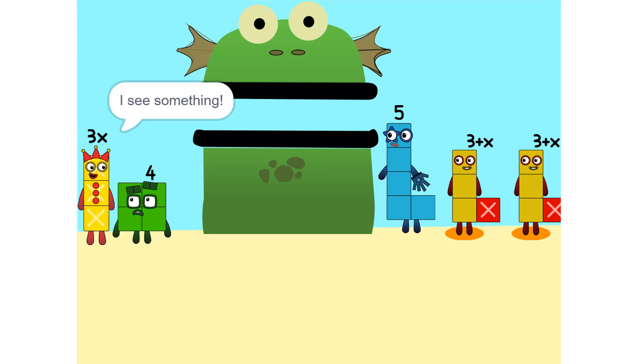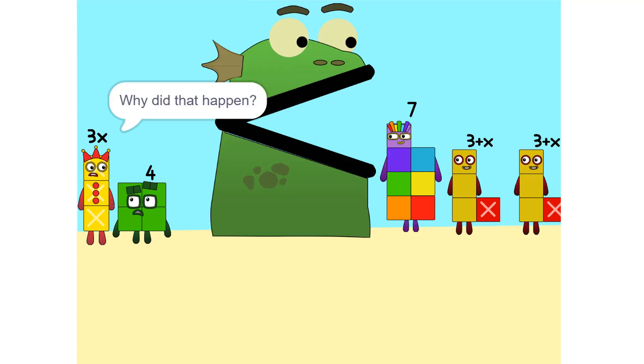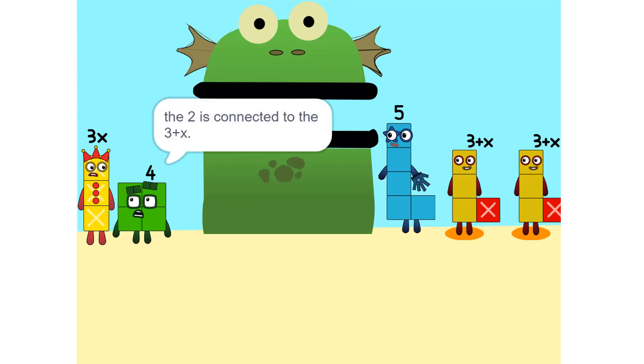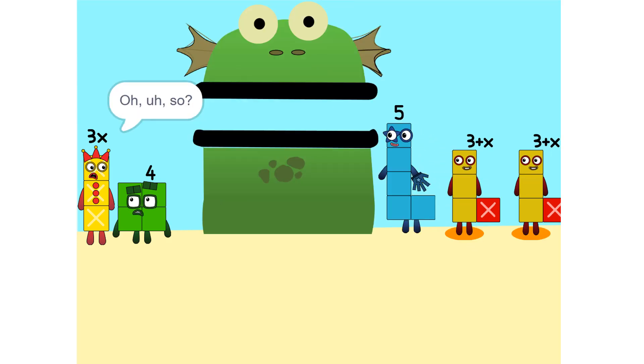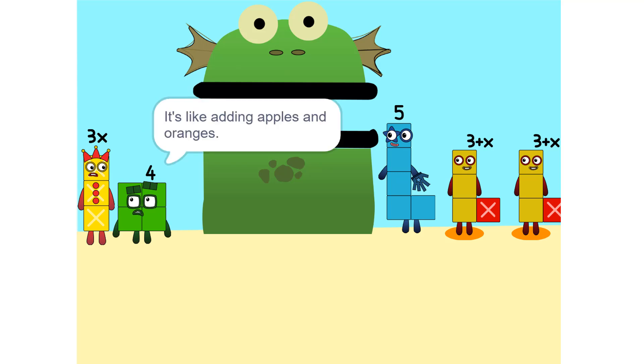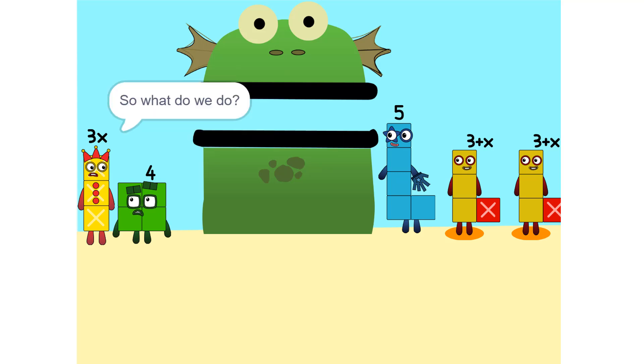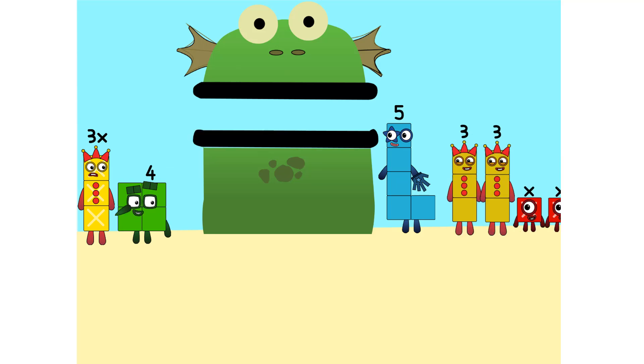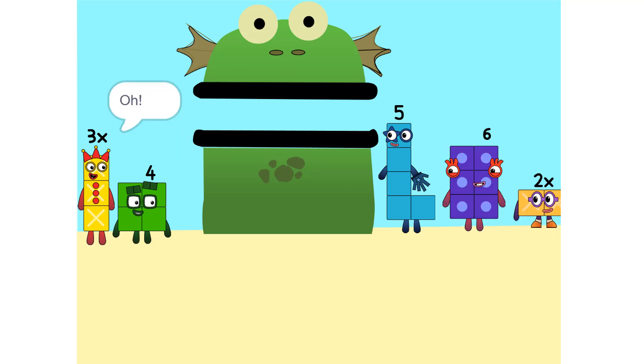I see something. We can add these. Why did that happen? Because the 2 is connected to the 3 plus x. It's like adding apples and oranges. So what do we do? See the 2 times 3 plus x? That's the same as 2 times 3 plus 2 times x, which is 6 plus 2x.